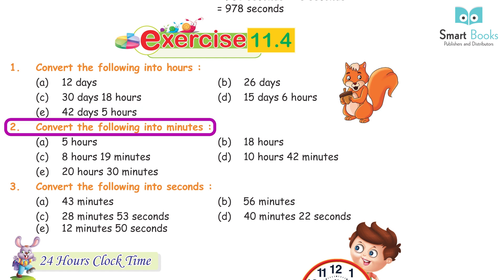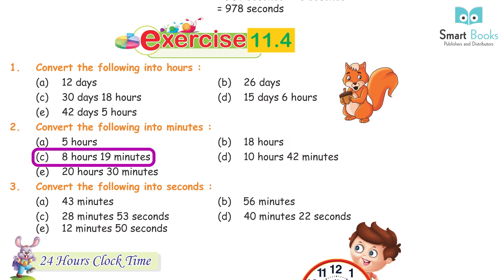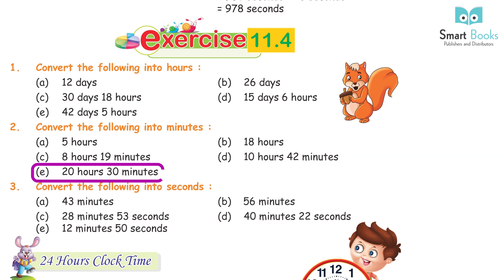Question 2: Convert the following into minutes. A. 5 hours = 300 minutes. B. 18 hours = 1080 minutes. C. 8 hours 19 minutes = 499 minutes. D. 10 hours 42 minutes = 642 minutes. E. 20 hours 30 minutes = 1230 minutes.